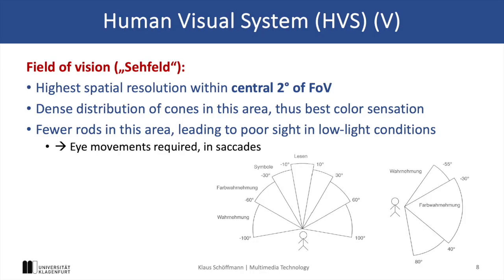Finally, let's look at the field of vision. The highest spatial resolution of the eye is in the center of 2 degrees of our field of view, which is why we must move our eyes frequently to capture all the details. This area contains the densest concentration of cones, giving us the sharpest color perception. However, fewer rods exist in this region, which is why it is much harder for us to see in low light conditions.